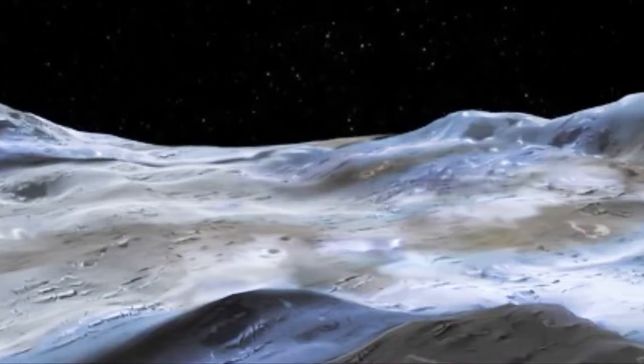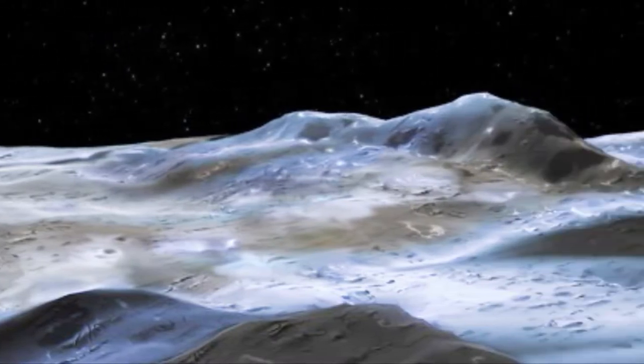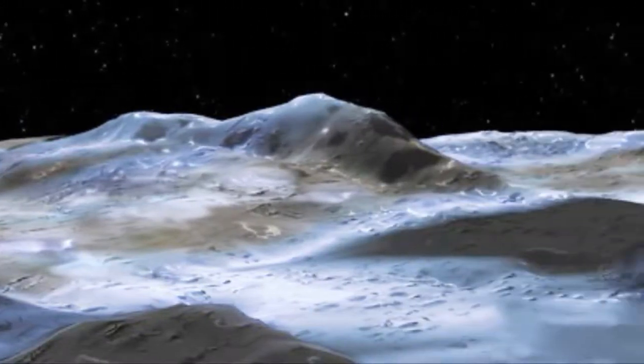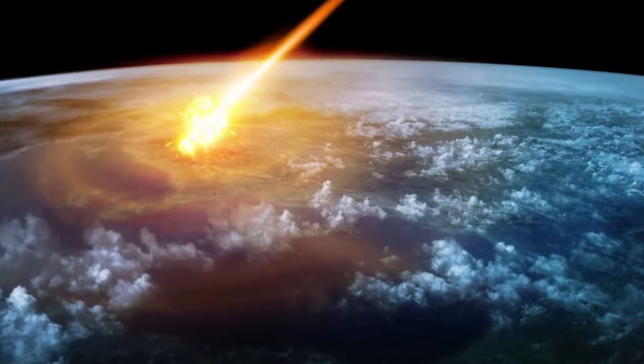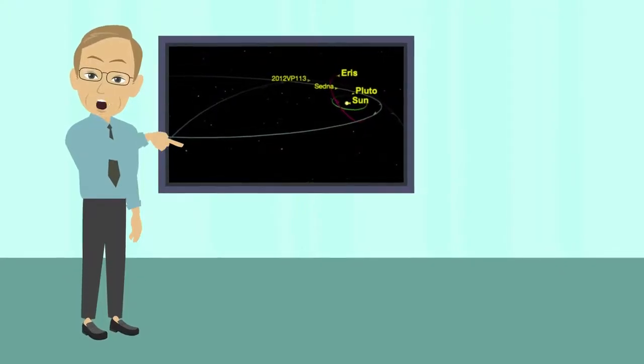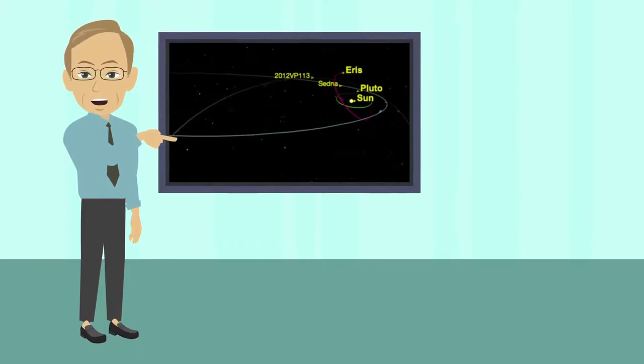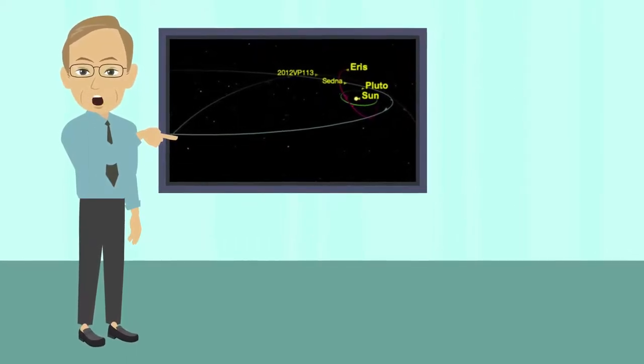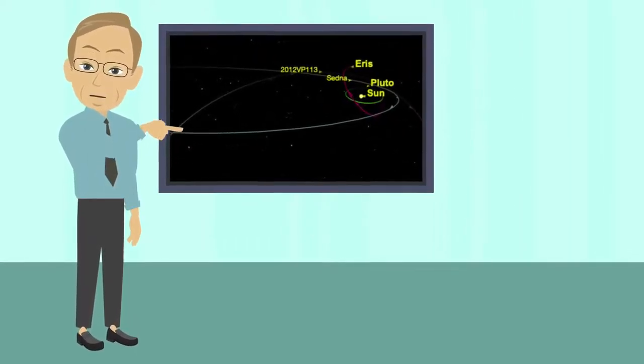Researchers believe Pluto will probably have a thick atmosphere and a liquid water surface. Collectively, the worlds from comet-like space rocks to dwarf planets like Eris and Sedna in this new habitable zone will have three times as much surface area as all four of the inner solar system planets combined.